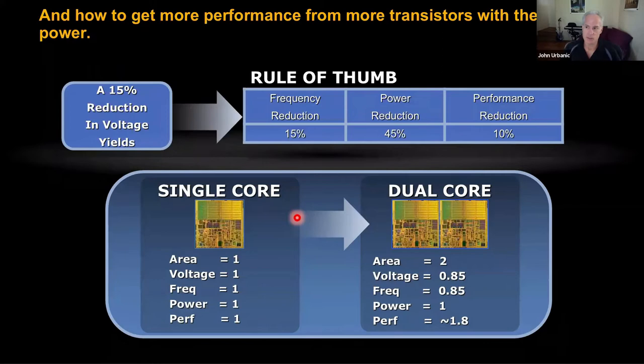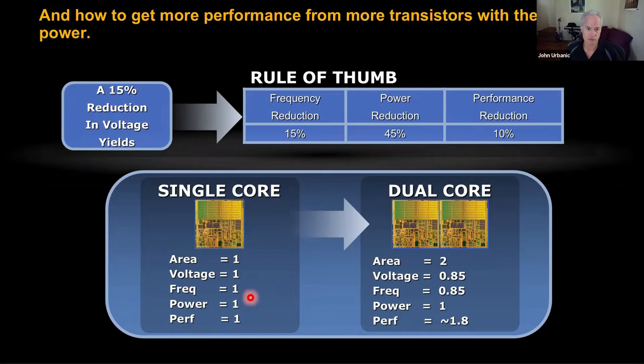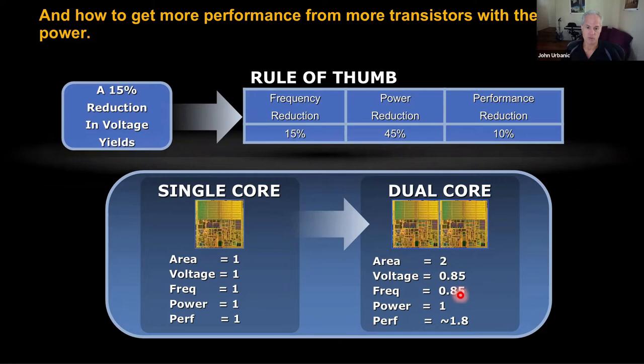The engineers said: we've got more and more transistors to work with. Instead of cranking up the clock rate and voltage like we had in the past, what if we actually did the opposite? What if we backed off the frequency a little bit — made things run a little slower — then we could decrease the voltage, and the power goes down a whole lot. Just by backing off the clock rate 15%, we get the power to go down by about 50%. That means we can stick two of these chips in the same power budget.